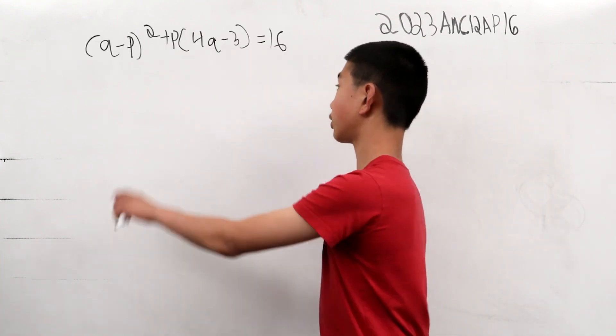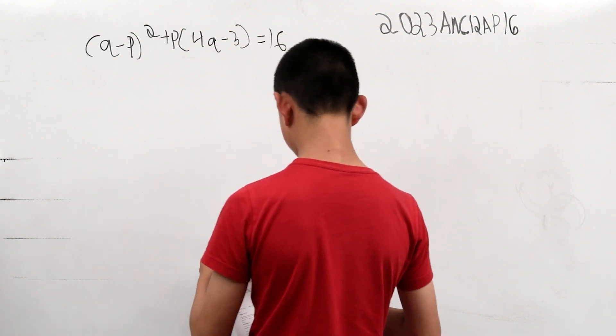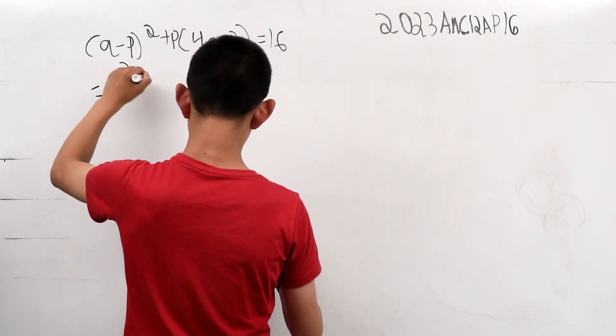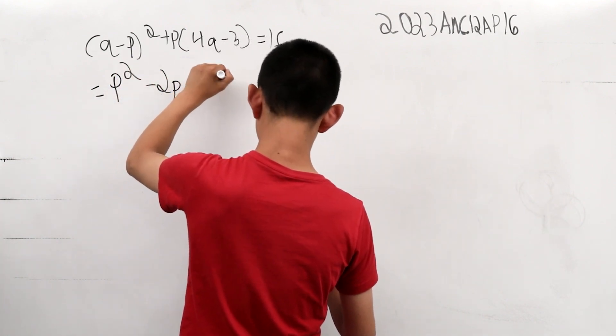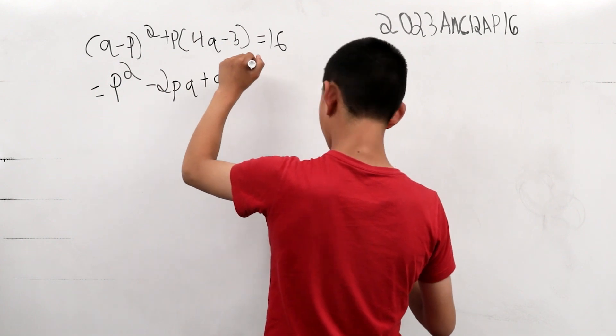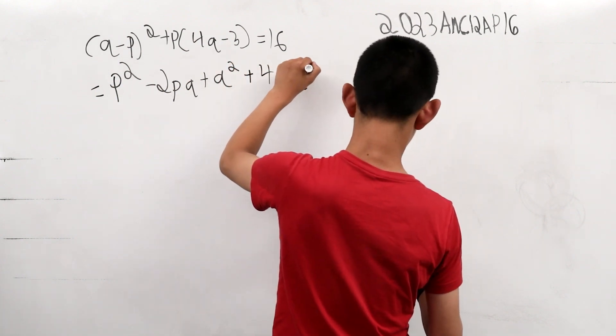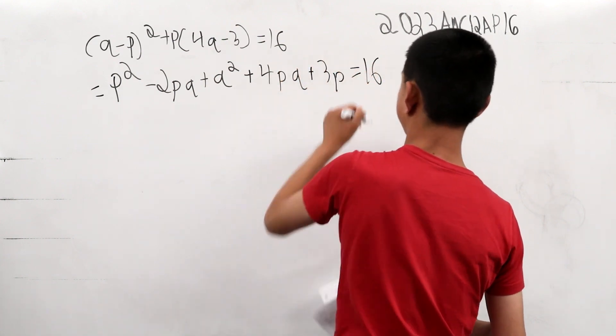Now, when we have this form, we can multiply everything out into one big equation. This is equal to p squared minus 2pq plus q squared plus 4pq plus 3p equals 16.